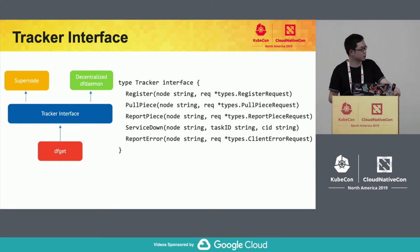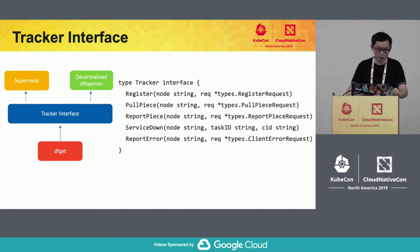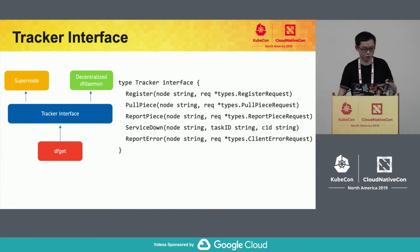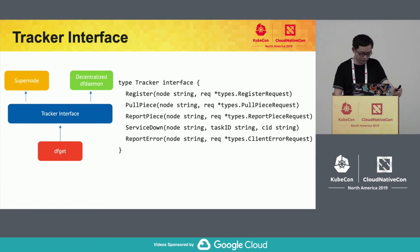There are a few more things to address. First, we need to define a tracker interface. In the traditional architecture, Supernode and DFGET communicate only via the Supernode API. In decentralized mode, we don't have Supernode anymore, but we still want to keep compatibility. The solution is to define a common tracker interface and implement it in the decentralized DFDMO, so we don't need to change too much code on the client side.